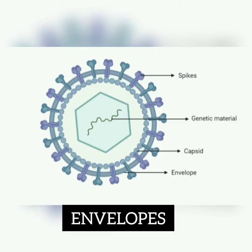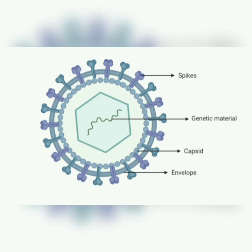Envelopes are a phospholipid bilayer which is present outside the capsid. They are acquired from the host cell when the virus has assembled in the cell while it buds or moves out of the cell.